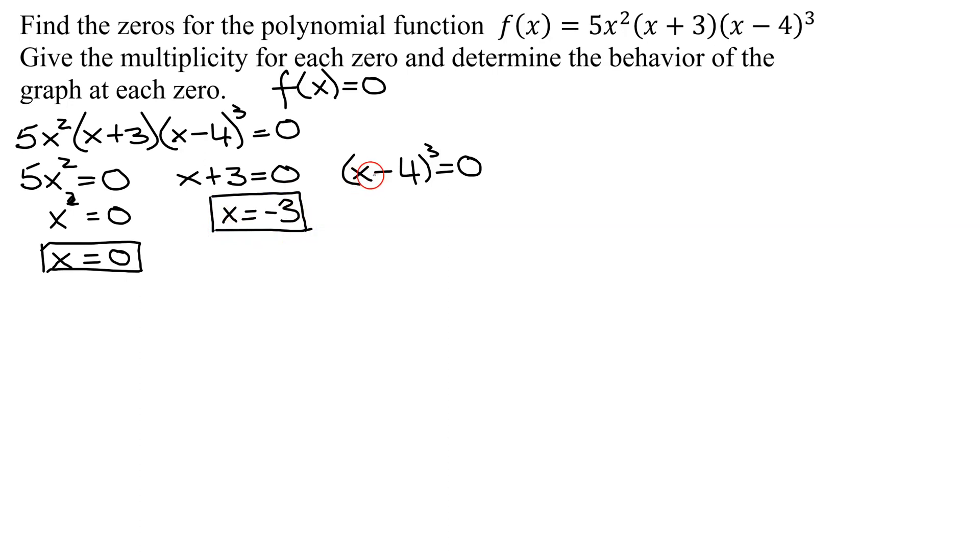Last one, x minus 4 all cubed equals zero. When x minus 4 equals zero, add 4 to both sides, I get x equals 4. So there are the three zeros for my polynomial.